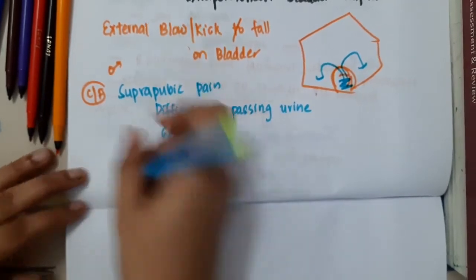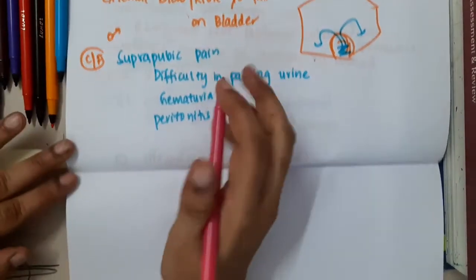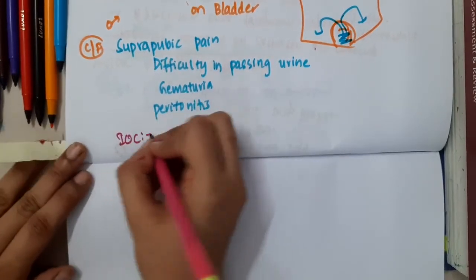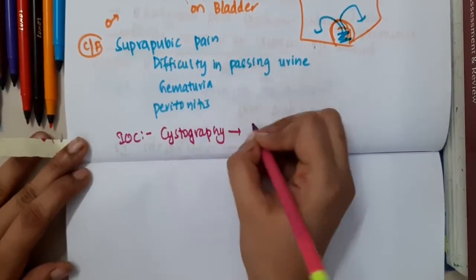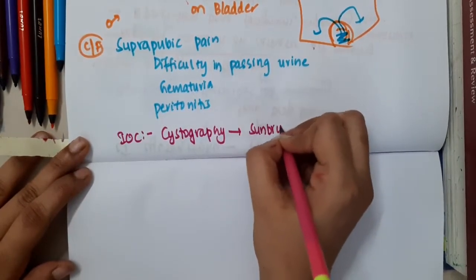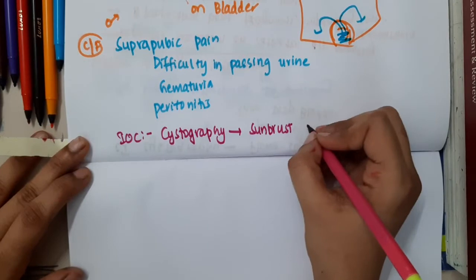The investigation of choice for intraperitoneal bladder rupture is cystography. In cystography, you will see presence of sunburst appearance.